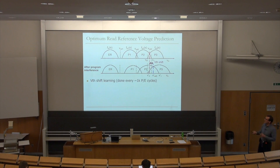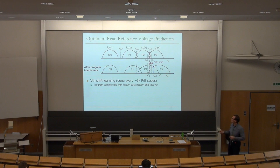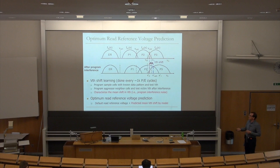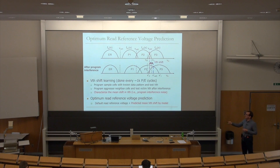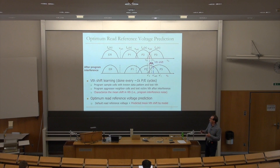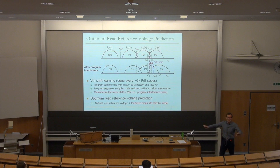You can learn models every 1000 program-erase cycles. You program some sample cells with known data patterns, test the threshold voltage, then program aggressor neighbor cells and test the victim threshold voltage after interference. You characterize the mean shift in the threshold voltage distribution — this is called program interference noise. Your optimum re-reference voltage prediction becomes the default re-reference voltage plus the predicted mean shift from this model, learned over time.